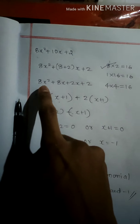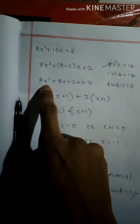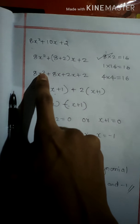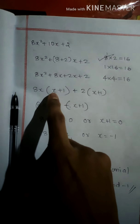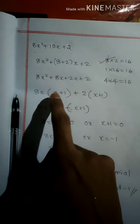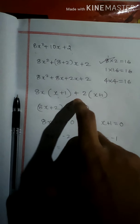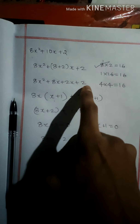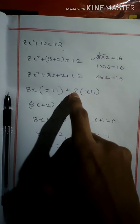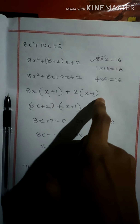Factoring by grouping gives us 8x multiplied by (x plus 1), plus 2 multiplied by (x plus 1). The common bracket is (x plus 1), so the factors are (8x plus 2) and (x plus 1).